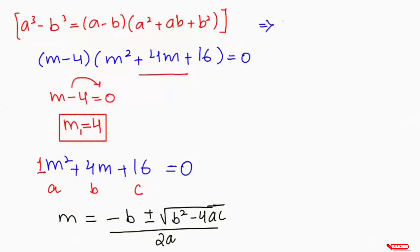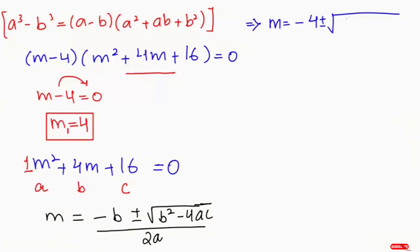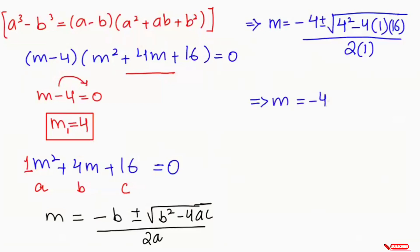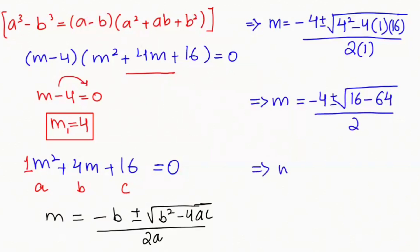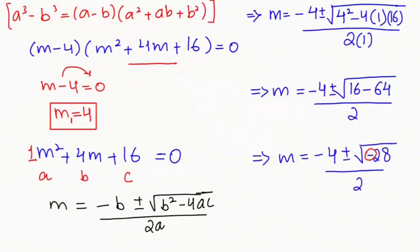Substituting the values: m equals minus 4 plus or minus root of 4 squared minus 4 times 1 times 16 over 2 times 1. This becomes minus 4 plus or minus root of 16 minus 64 over 2, which turns to m equals minus 4 plus or minus root of negative 28 over 2. I want to separate the negative sign from 28, so I write m equals minus 4 plus or minus root of 28 times negative 1.